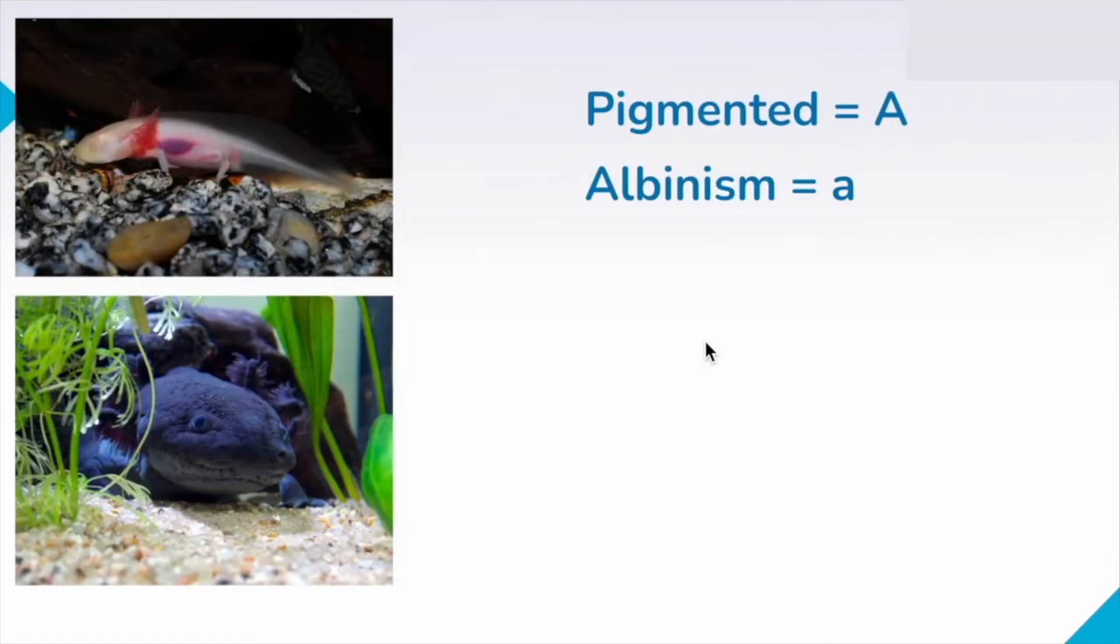So some basic review for Mendelian inheritance. This is our classical dominant recessive type of inheritance. Remember that genes are often represented by letters, and different versions of genes could be capital or lowercase letters. So here we see the trait for this axolotl. The color of their skin is either going to be pigmented, so this dark color, or without pigment, so this albino axolotl. And to represent these different versions of these traits, we have letters that are going to be different alleles. So the pigment allele will be a big A, and the albino allele will be a little a.